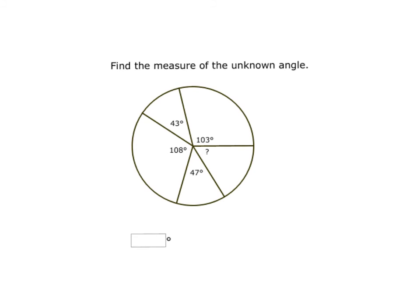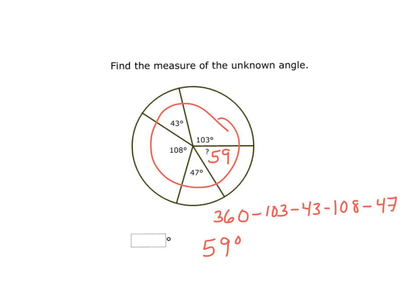We are looking for the measure of the unknown angle. If you want to put an X in there, you can. If you want to hit pause and try this problem on your own, and then come back and hit play and see if you got it right, that is totally fine. The math behind this, again, we're using the fact that we have 360 degrees. We're going to subtract out the 103, the 43, the 108, and the 47. So grab your calculators, run those numbers through. I got 59. What I can do to double check my answer, if I add up all of these numbers, I should end up getting 360. Plus 43, plus 108, plus 47. And I do get 360 degrees. So I know that my answer is fine.